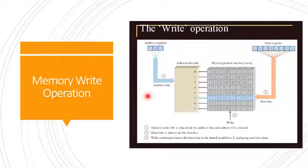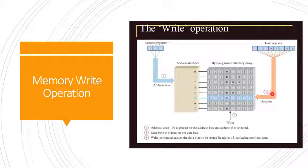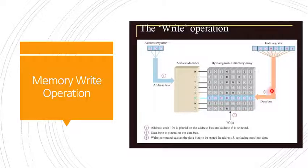In this example, the address register holds a value of 101. The decimal representation of 101 is 5. Once 101 is carried by the address bus, the address decoder decodes it and address 5 is selected. Next, the data byte is placed on the data bus once the control signals are released. As soon as the control signals are released, the data bytes are placed on the data bus and the data is written to the selected address, which is address 5.